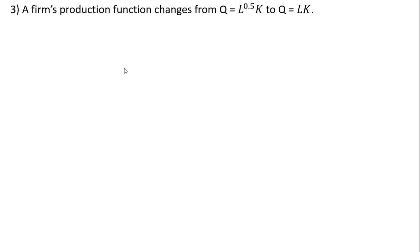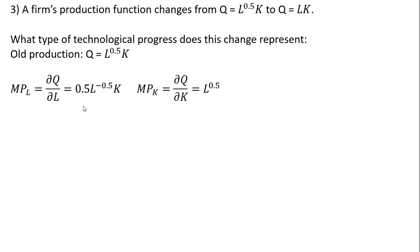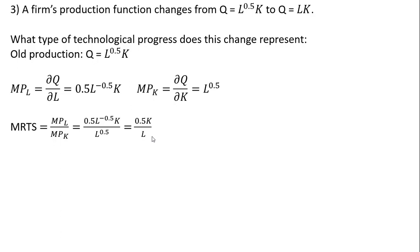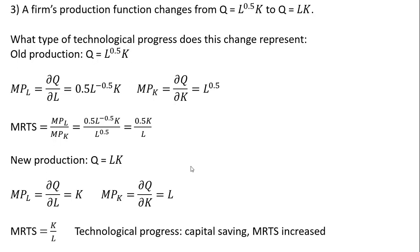Example 3: a firm's production function changes to a new form. With the old production function, we get our marginal product of labor and marginal product of capital, and form the marginal rate of technical substitution, which simplifies to 0.5K divided by L. With the new production function, we get different marginal products of labor and capital. Forming the marginal rate of technical substitution, we see that it increased — it went from 0.5K divided by L to K divided by L. So this represents capital-saving technological progress.